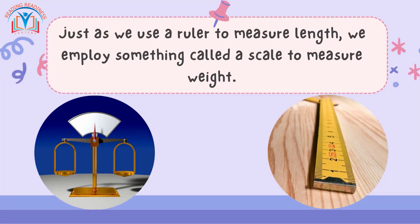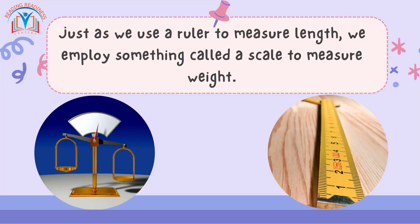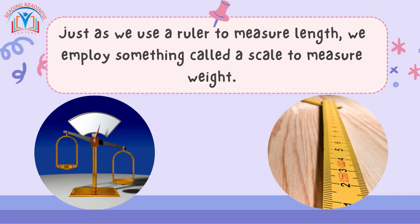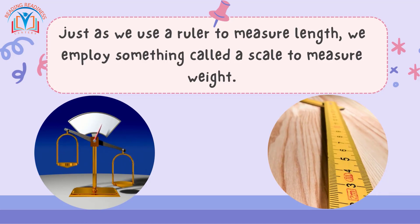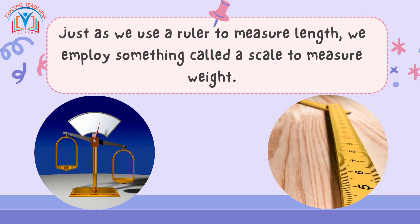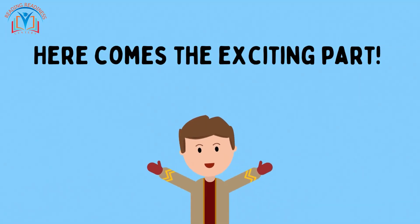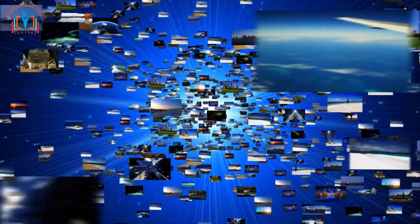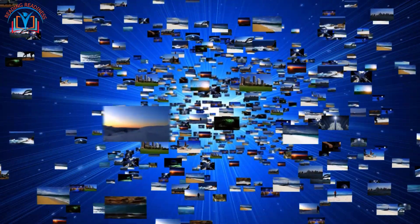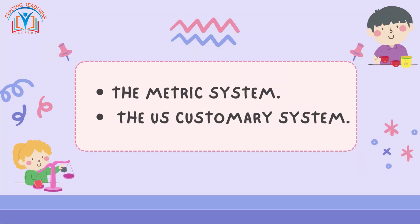Just as we use a ruler to measure length, we employ something called a scale to measure weight. In different parts of the world, we use different systems to measure weight. Today we'll learn about two systems: the metric system and the U.S. customary system.